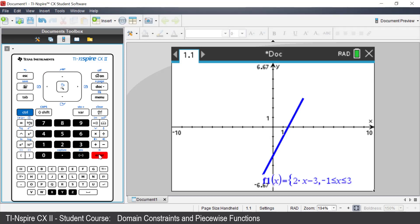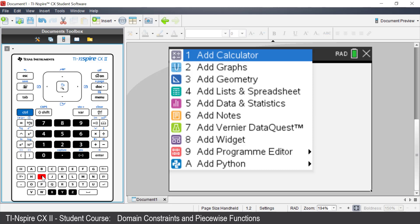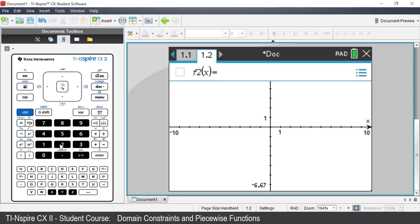You have drawn your restricted domain graph. Insert a new graphs application. Select add graphs. We are going to graph a piecewise function.